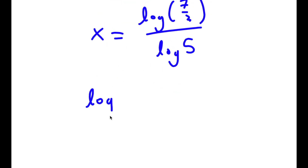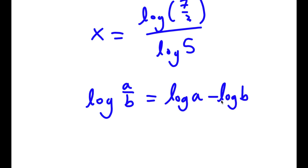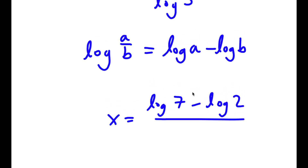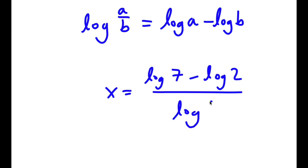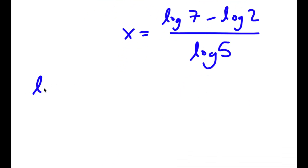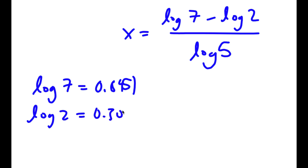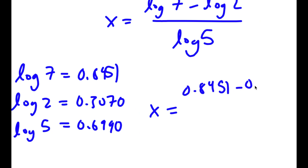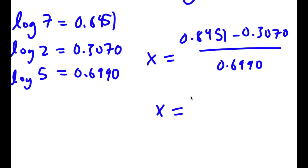Now, if I have something in the form log a over b, this is equal to log a minus log b. So log of 7 over 2 is going to equal log 7 minus log 2, and I have this over log 5. Now log 7 is equal to 0.8451, log 2 is equal to 0.3070, and log 5 is equal to 0.6990. So x is equal to 0.8451 minus 0.3070 over 0.6990, which is equal to 0.7784.